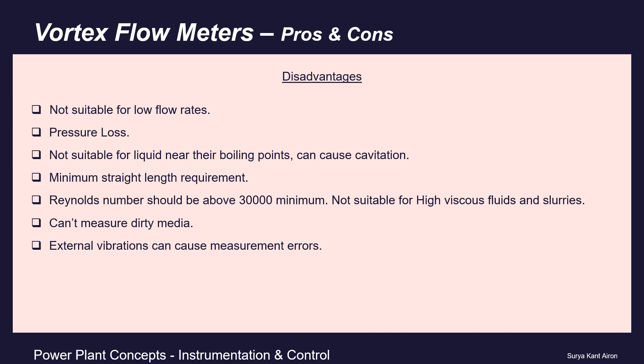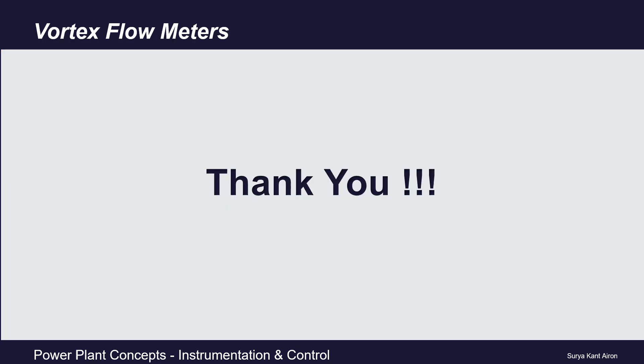Additionally, the pipe Reynolds number must be above 30,000 minimum, meaning vortex flow meters can only be used for low-viscosity fluids. They are not recommended for high-viscosity fluids or slurries, cannot measure dirty media, and since piezoelectric sensors are used, external vibrations can cause measurement errors.